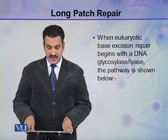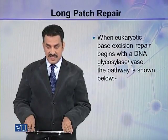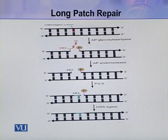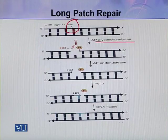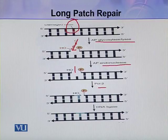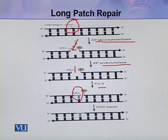When eukaryotic base excision repair begins with a DNA glycosylase-lyase, the pathway proceeds as follows: the damaged base is excised by the glycosylase-lyase, which also has dual function and introduces a nick. Then AP endonuclease cuts the site, DNA polymerase beta adds a deoxyribonucleotide to the 3'-hydroxyl end, and finally DNA ligase seals the nick.